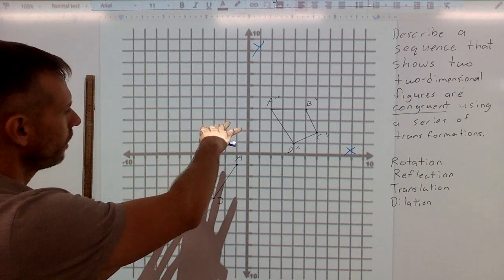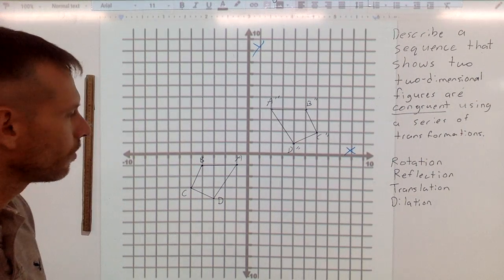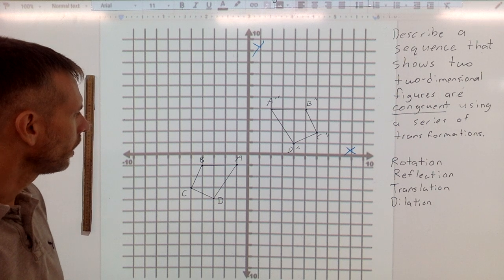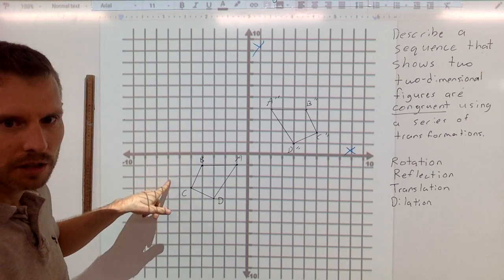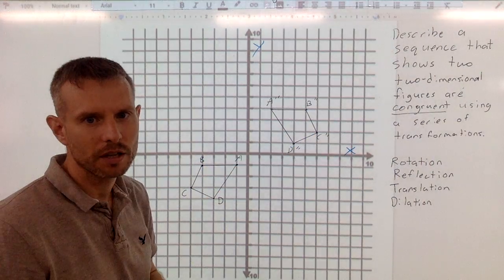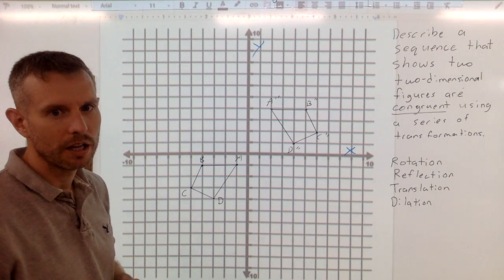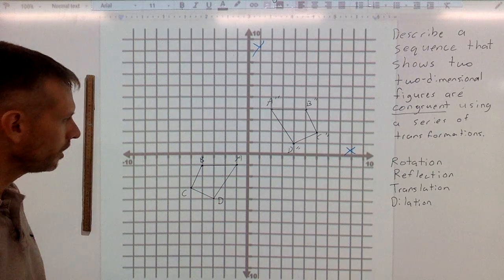Also, I can kind of tell that it's not a rotation 90 degrees in either direction, just based on how the points are oriented. And I do also notice that here C and B are on the left side, and here B and C are on the right side. So that makes me first think that perhaps I should do a reflection over the Y axis. So I'm going to go ahead and do that.